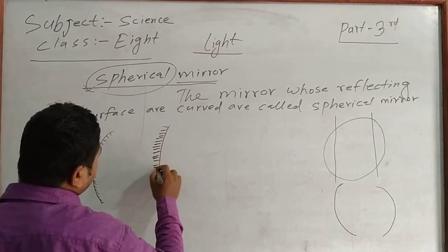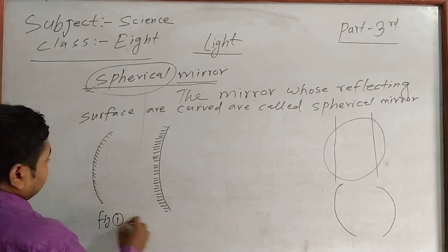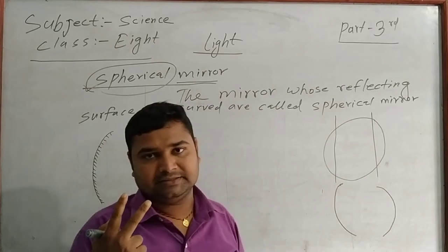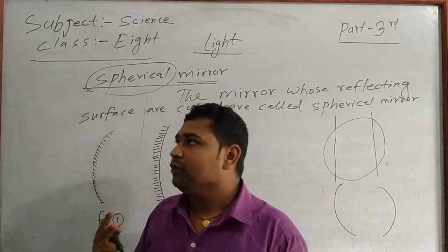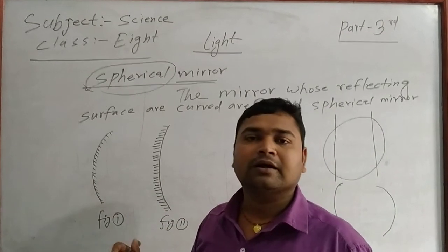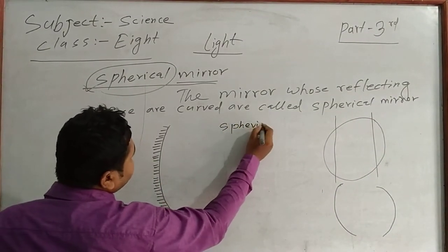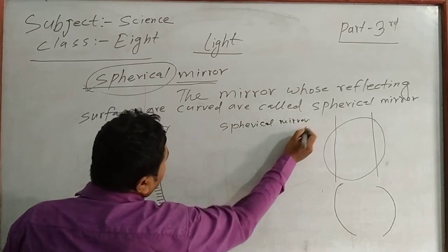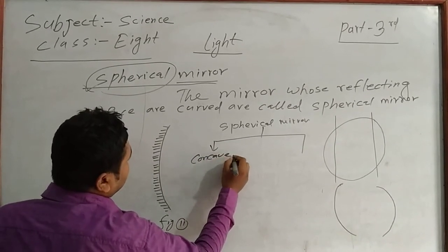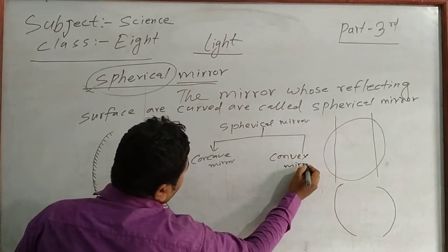I have drawn two figures — figure number one and figure number two. Spherical mirrors are mainly of two types. One is the concave mirror and another is the convex mirror — concave mirror and convex mirror.